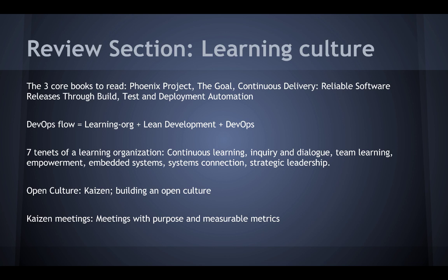The fourth tenet is Empowerment, which encourages feedback and actions to address the gap between the current status and the vision, regardless of rank. Fifth is Embedded Systems, which establishes systems to capture and share learning. Sixth is Systems Connection — actions to connect the organization to its internal and external environments. Seventh is Strategic Leadership — the extent to which a leader acts strategically using learning to create change.